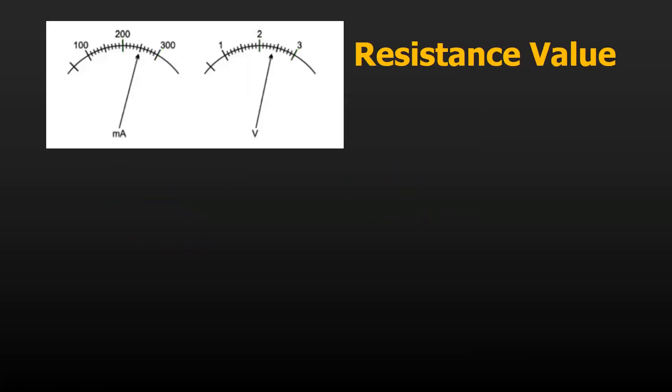Now let's find out the resistance value. What is the value measured by the ammeter? The current measured is 250 milliampere, which is 0.25 amperes.